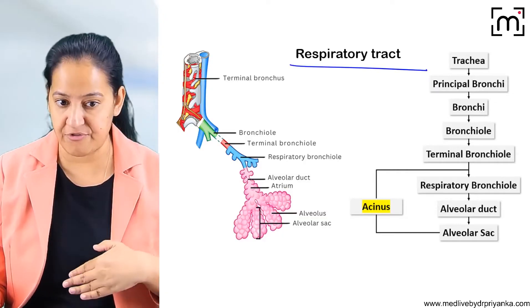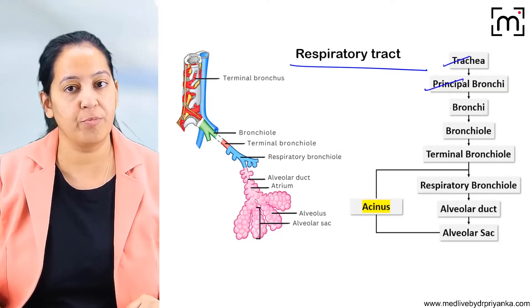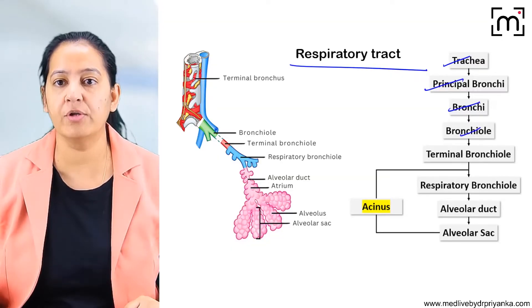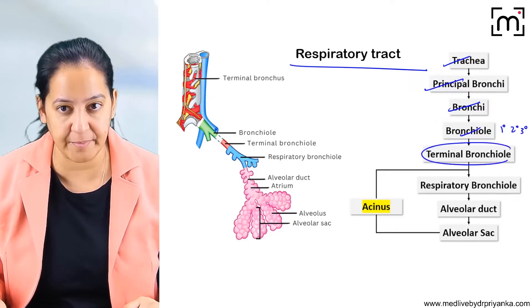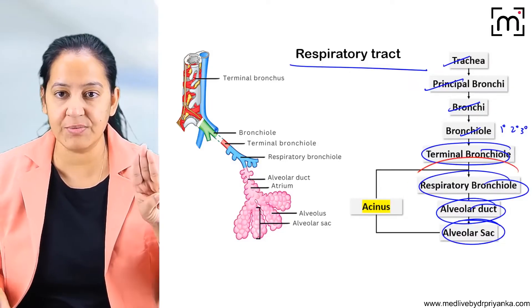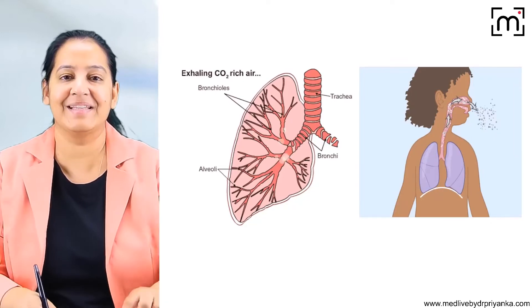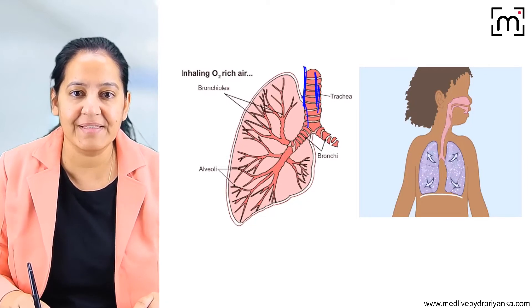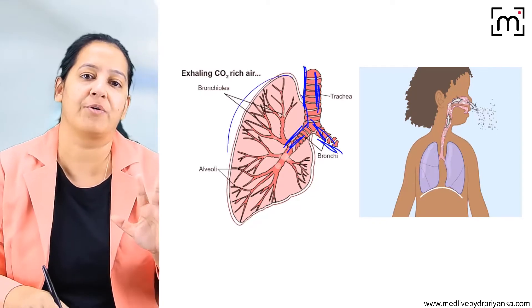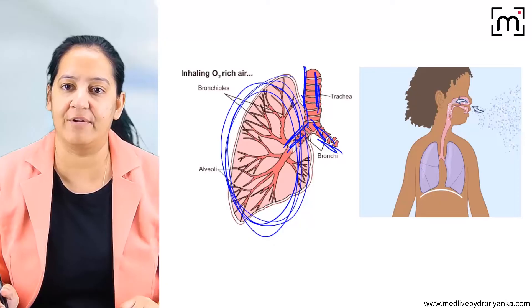Looking at the lower respiratory tract on the diagram, we start with the trachea, which divides into the two principal bronchi — right and left — then the bronchioles: primary, secondary, tertiary, terminal, respiratory, and finally alveolar ducts and alveolar sacs. You can appreciate on the diagram the trachea, the two bronchi, and the various bronchioles through to the alveolar sacs. The last three structures together are known as acinus.